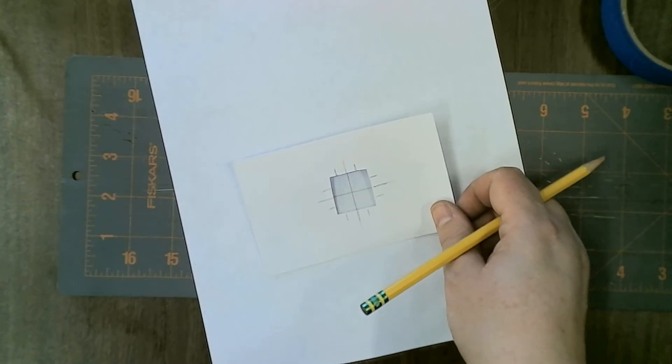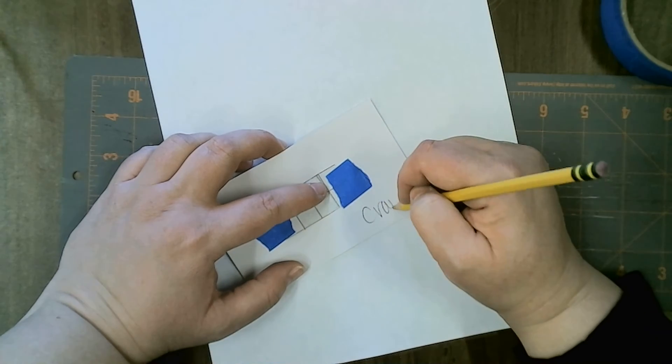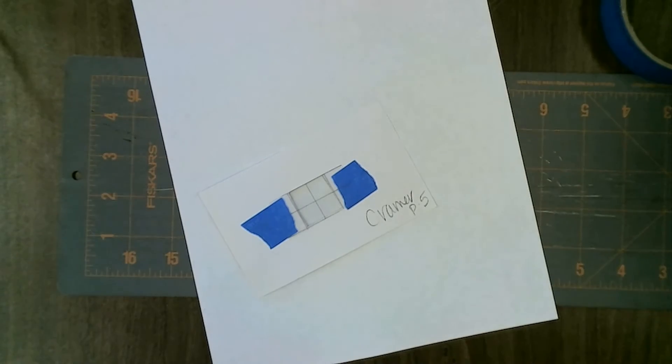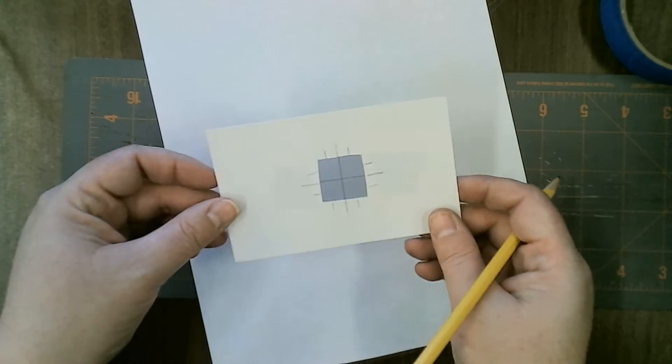That would give you some further markings. I do want you to put your name and period on it. In case it ends up on the floor, we'll know who it goes back to. Hopefully because it's bigger, you won't lose it as easily.